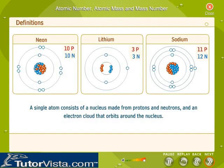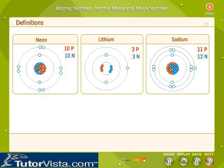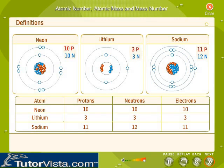We know that a single atom consists of a nucleus made from protons and neutrons, and an electron cloud that orbits around the nucleus. In the atoms of different elements, the combinations of these three fundamental particles vary.